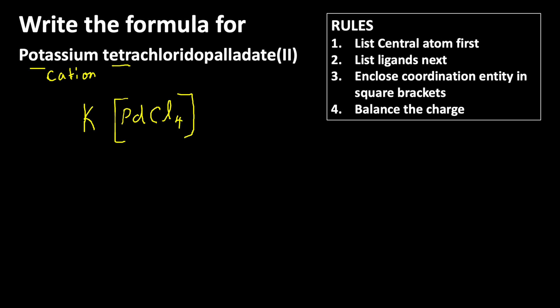We can write +2 oxidation state, then chlorine has -1 charge. There are 4 chloride ions present, so +2 plus -4 equals -2. It means this anionic complex carries -2 charge.